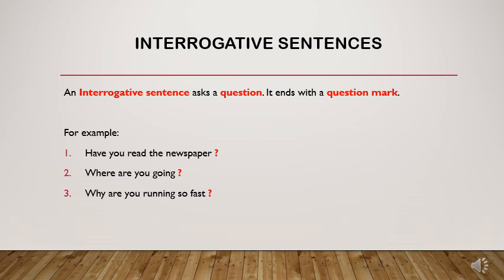Next, interrogative sentences. An interrogative sentence is a type of sentence which asks a question, and it will always end with a question mark. Examples: 'Have you read the newspaper?' 'Where are you going?' 'Why are you running so fast?' You can see there is a question in each statement. We learned WH questions last year — words like where, why, when relate to questions. Some other exceptions are 'have,' 'can,' 'could,' which also form questions.